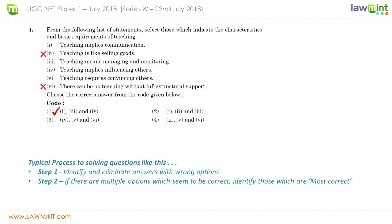Statement six says there can be no teaching without infrastructural support — this is also a wrong statement, because you must have heard of schools being run under trees. Infrastructure is ideal and good to have, but even without it teaching can happen. Therefore six is a wrong statement. When we eliminate answer choices which have six, we eliminate three. Having already eliminated two and four, we are left with choice one, which is the correct answer.